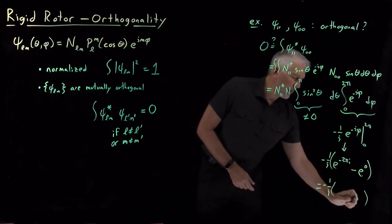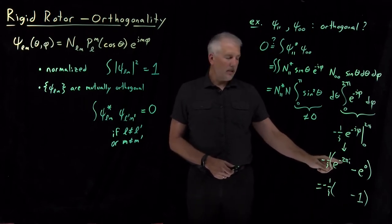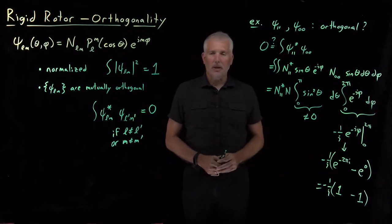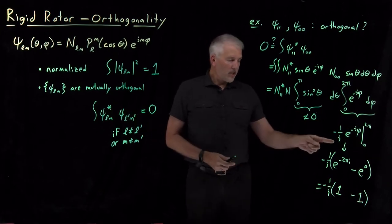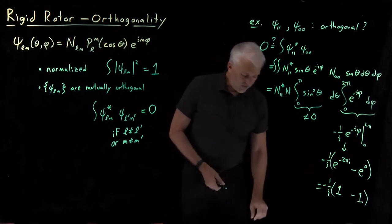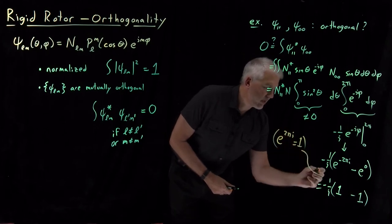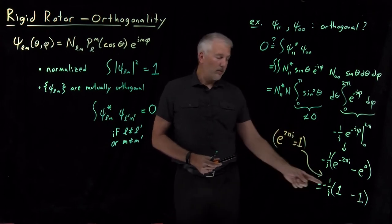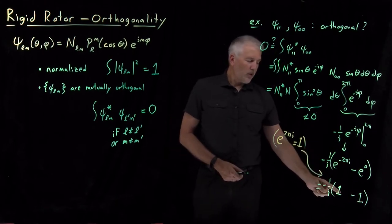Plugging in the limits, this becomes (-1/i)[e^(-2πi) minus e^0]. Now e^0 equals 1. And a key fact we need for quantum mechanics is that e^(2πi) equals 1, so e^(-2πi) is 1 over e^(2πi), which is 1 over 1, which is also equal to 1. Using that fact, e^(-2πi) = 1, and we see that 1 minus 1 equals 0.